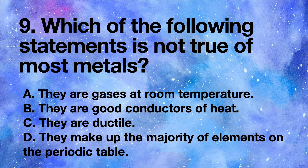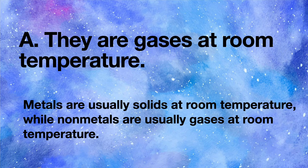Which of the following statements is not true of most metals? A they are gases at room temperature, B they are good conductors of heat, C they are ductile, D they make up the majority of elements on the periodic table. Answer: A they are gases at room temperature. Metals are usually solids at room temperature, while non-metals are usually gases at room temperature.